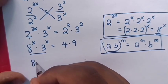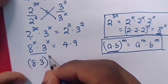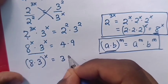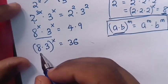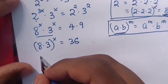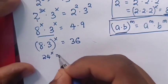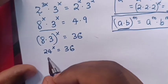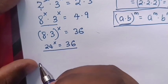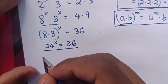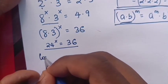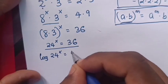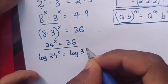So 8 times 3, bracket power x, is equals to 36. That is 24 power x is equals to 36. Now from here we will apply log of base 10 in both sides, so it will be log 24 power x is equals to log 36.